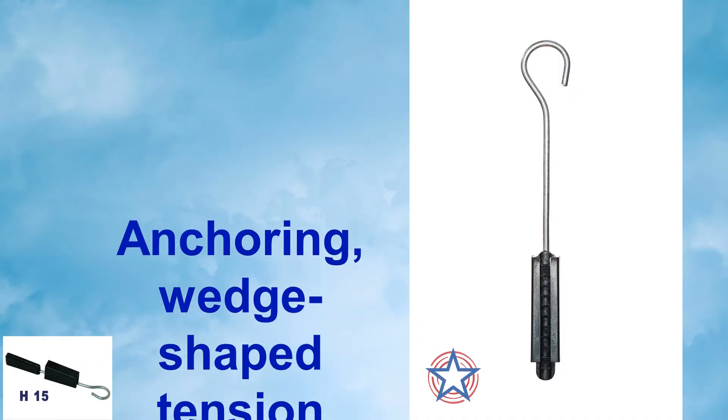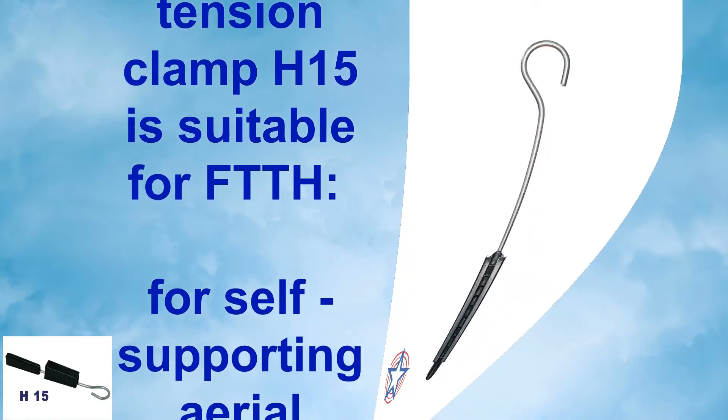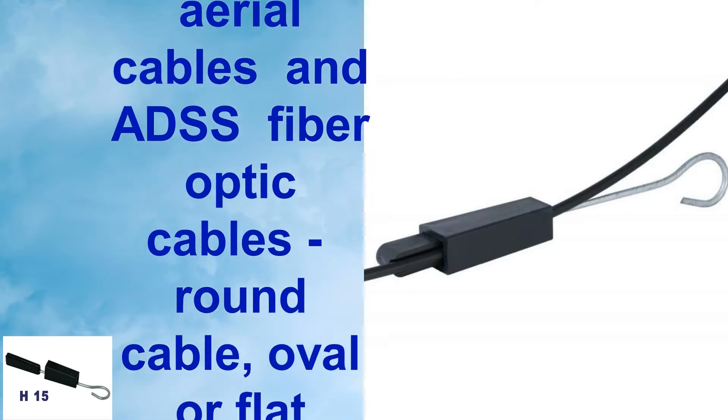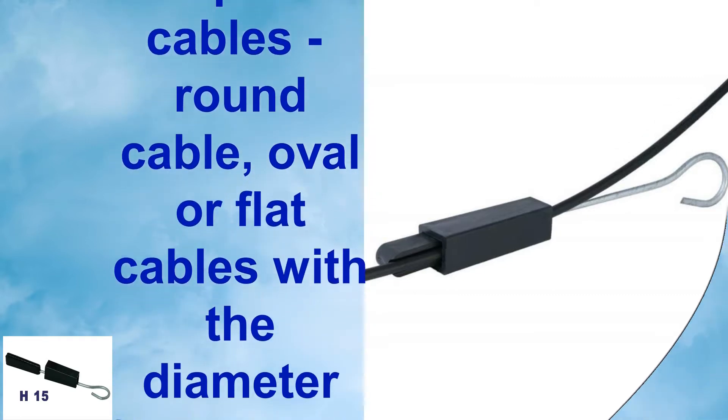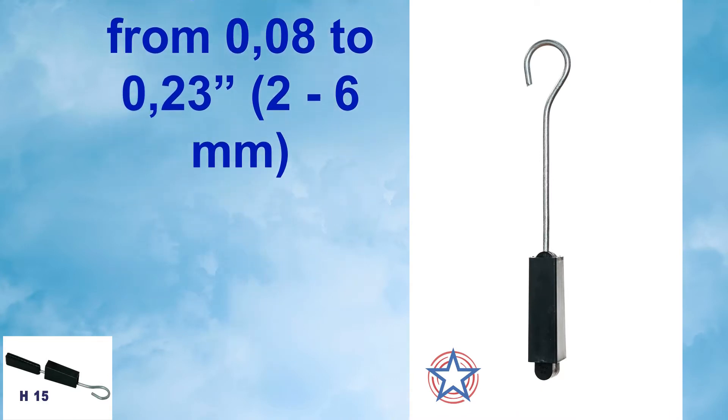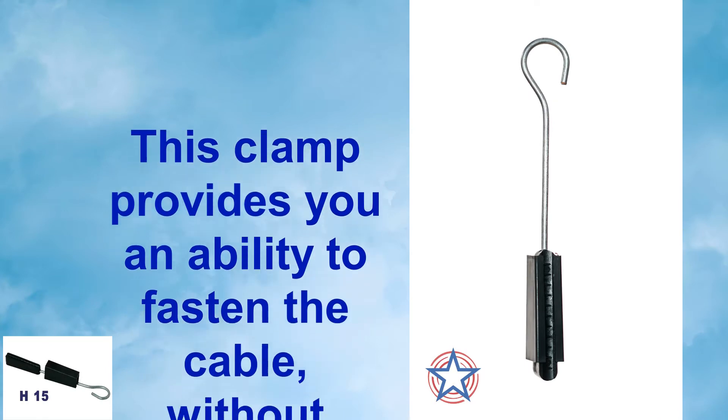Anchoring wedge-shaped tension clamp H15 is suitable for FTTH, self-supporting aerial cables and ADSS fiber optic cables - round cable, oval or flat cables with a diameter from 0.08 to 0.23 inches.